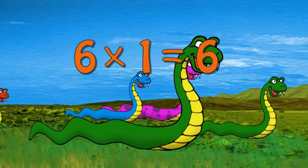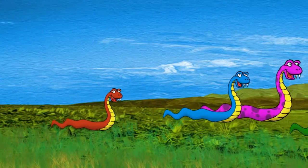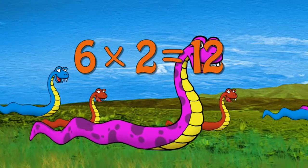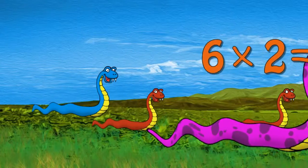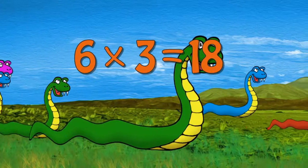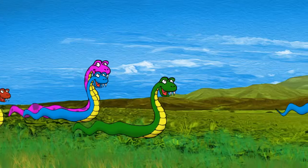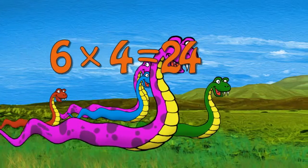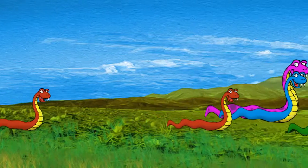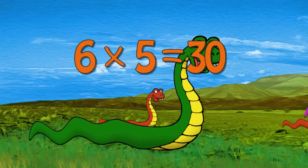Six times one is six. Six times two is twelve. Six times three is eighteen. Six times four is twenty-four. Six times five is thirty.